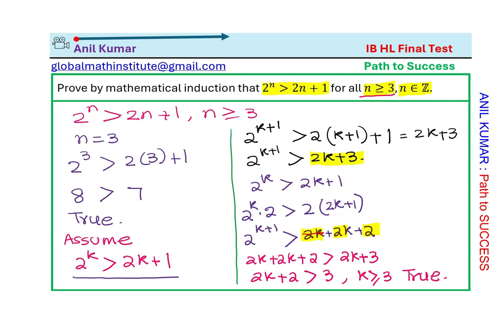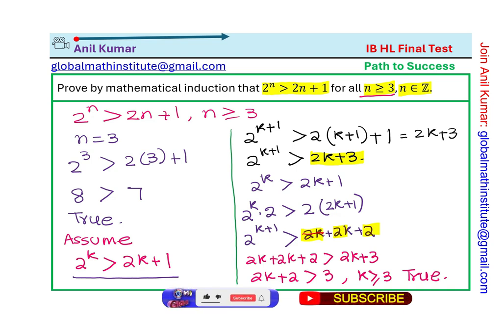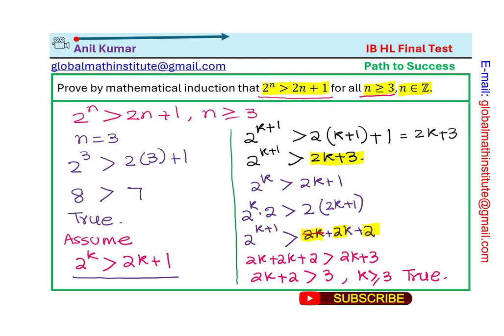So you can see that since we have shown that 2 to the power of k plus 1 is also greater than 2 times k plus 1 plus 1, we can from here conclude with the method of mathematical induction that 2 to the power of n is greater than 2n plus 1 for all n greater than or equal to 3, where n belongs to integers. I hope it makes sense.